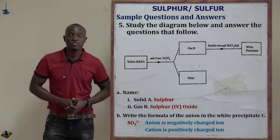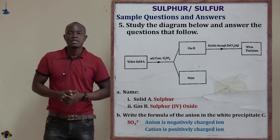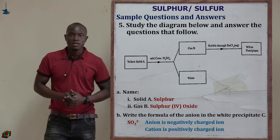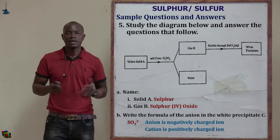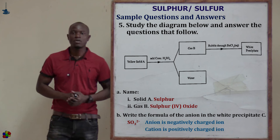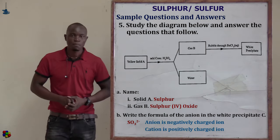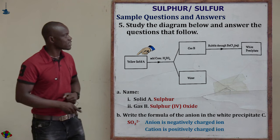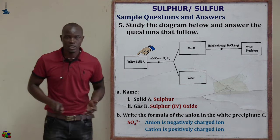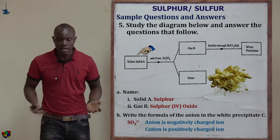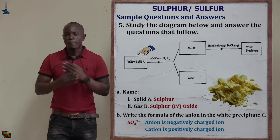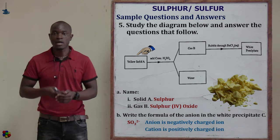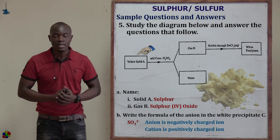Question number five is another flow chart. We start with solid A and add concentrated sulfuric acid. Part I asks: name solid A. Since the diagram shows a yellow solid, that automatically means it is sulfur — a yellow solid is sulfur. If we heat sulfur, we get an amber or orange liquid sulfur.